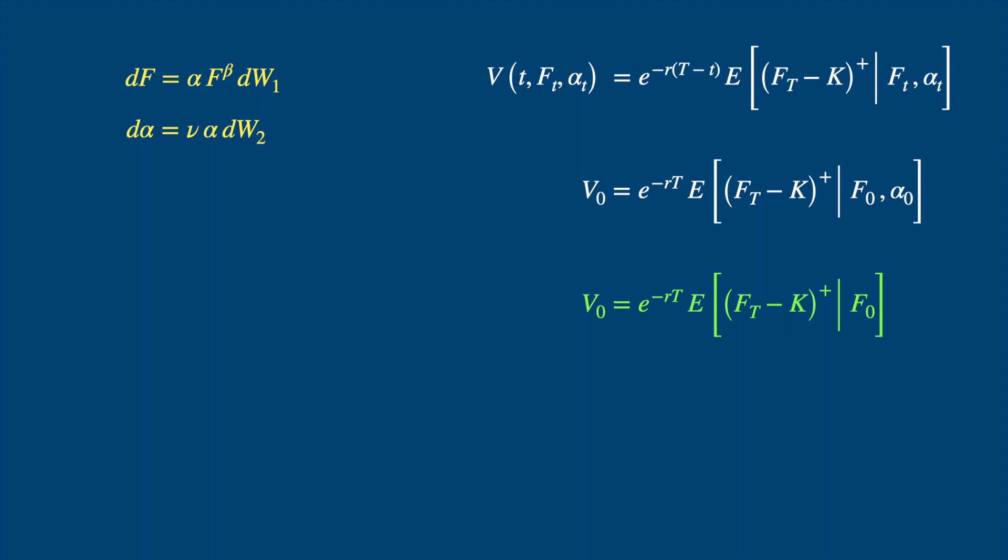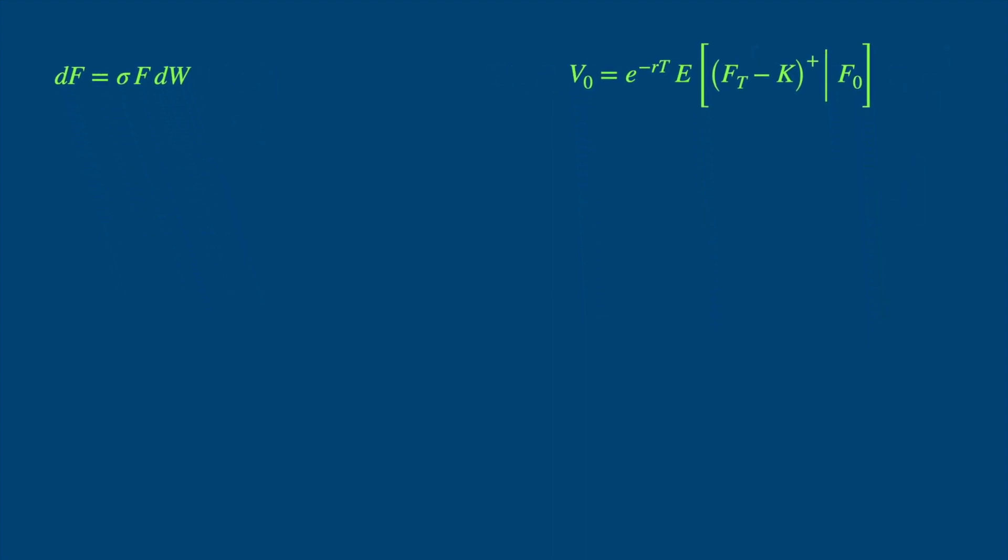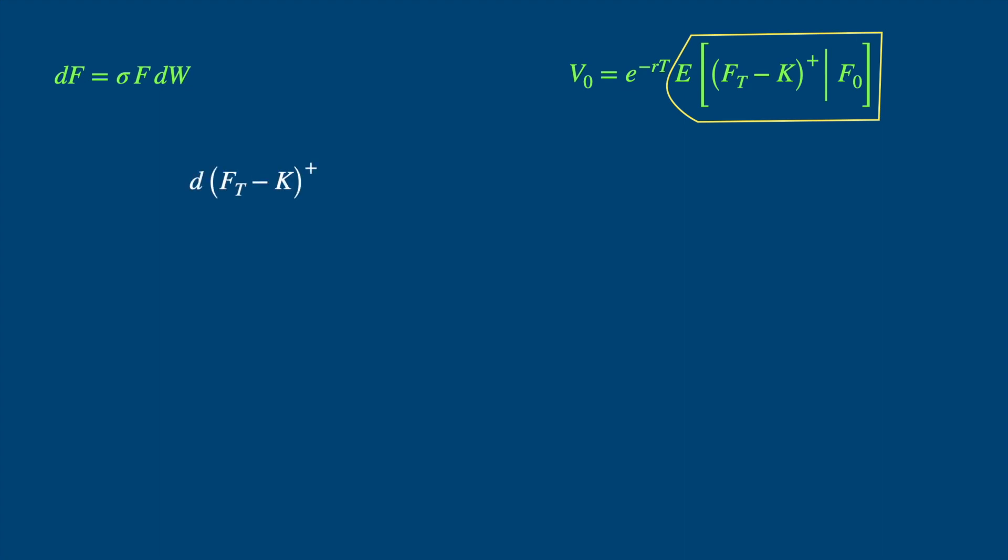This will help us appreciate the unfamiliar using familiar stuff. We know the Black Scholes dynamics under the forward measure will look as follows, and this is what's called the Black Model. Of course, the main task is to evaluate this expectation of the payoff. So let's take the payoff, and apply Ito's lemma to it.